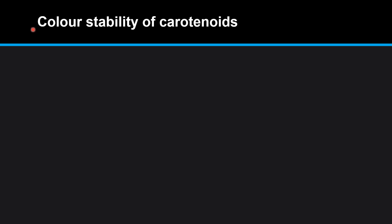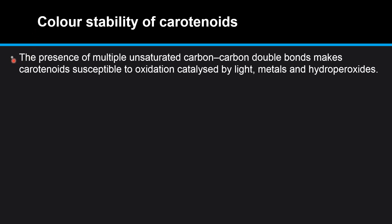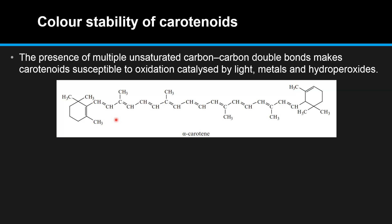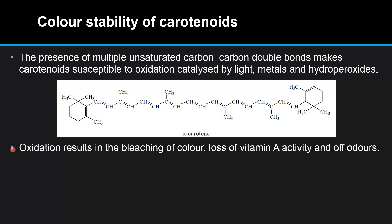Next we look at the color stability of carotenoids. The presence of multiple unsaturated carbon-to-carbon double bonds makes carotenoids susceptible to oxidation catalyzed by light, metals, and hydroperoxides. Here is the structure of a carotenoid — you can see the alternating carbon-to-carbon double bonds and carbon-to-carbon single bonds, which make carotenoids susceptible to oxidation. The oxidation results in the bleaching of color, loss of vitamin A activity, and off odors.